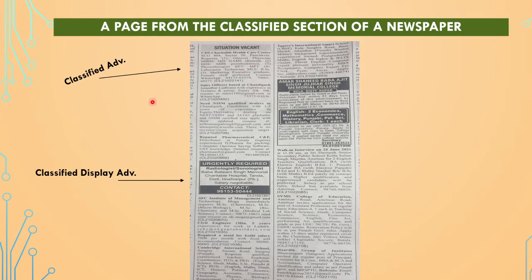This is a page from the classified section of a newspaper — this is how the classified section looks like. So here, the heading 'Situation Vacant' appears at the top, and below that there are all the advertisements under this category. This is classified advertisement number one, this is a second, this is a third. But this bold one — this is a classified display advertisement. It is covering a larger area than the simple ones.